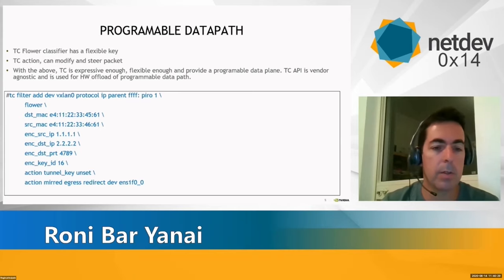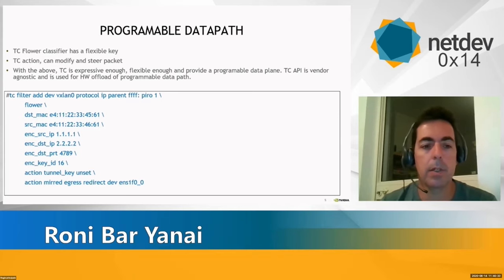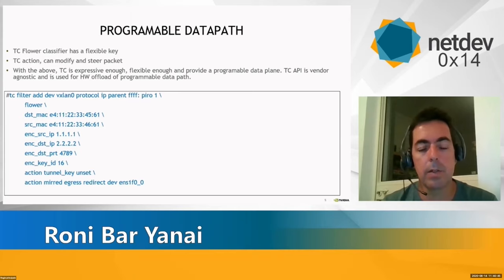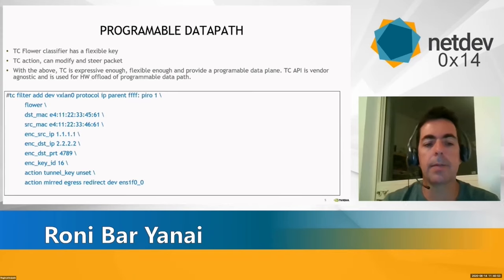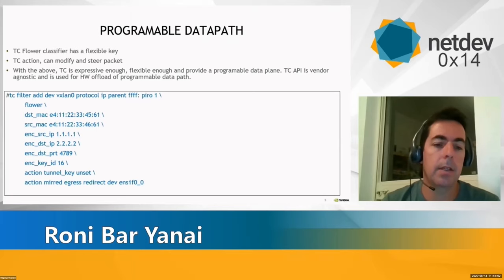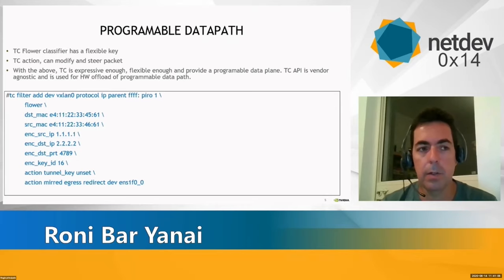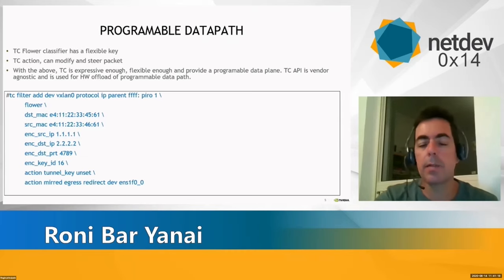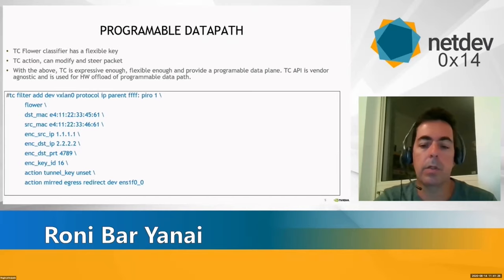Here is an example — a very famous one — of how you add a flow for VXLAN decap. You configure a TC flower rule matching destination MAC, source MAC, source IP, destination IP of the tunnel itself, the destination port 4789 (the default VXLAN port), and the VNI, which is 16 in this case. The action is DECAP — unset the tunnel — and the next action is send to the VM. So packets with VNI 16 from this source IP and destination IP will go to this port. TC also has a go-to-chain, which can express a table.